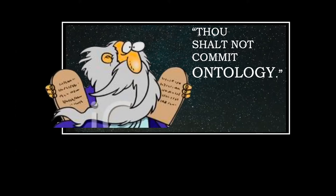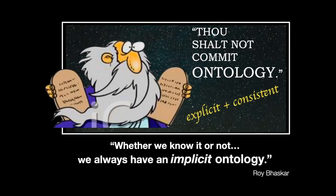Roy Bhaskar says you can't help but do ontology. Whether you like it or not, whether you know it or not, we always have an implicit ontology — assumptions about reality that are shaping your research and the way you act. So we may as well be explicit about our ontologies so that we can be consistent. If our assumptions of reality are X, Y, and Z, it's important that our research project is consistent with those assumptions.